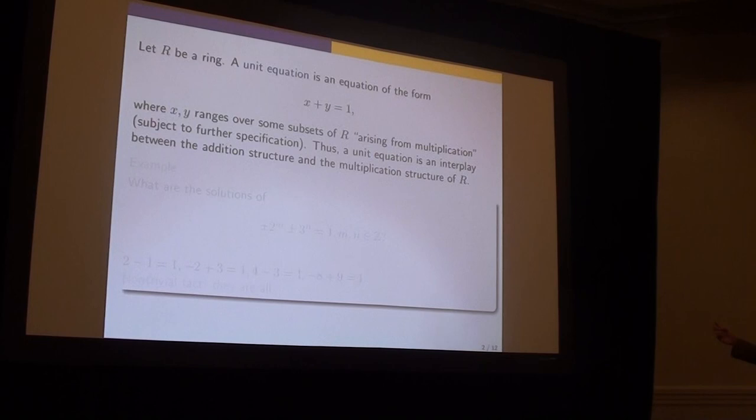Now let me be very vague here, because there are many things subject to specification later on. But a unit equation, in the most general way to say it, is: let R be a ring. It's an equation of the form x plus y equals 1, where x and y range over some subsets of R arising from application. The point is that x and y should range over subsets that have the flavor of multiplication. You want to look at the structure of solutions. It can be viewed as an interplay between the addition structure and the multiplication structure of R.